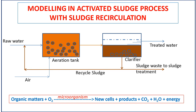During the treatment process, the substrate concentration will decrease until the desired output concentration target is obtained, and the microbial concentration will increase. The liquid mixture from the aeration tank is then put into a sedimentation tank to separate the clear liquid from the processing, with the output substrate concentration and the microbial sludge — called activated sludge.